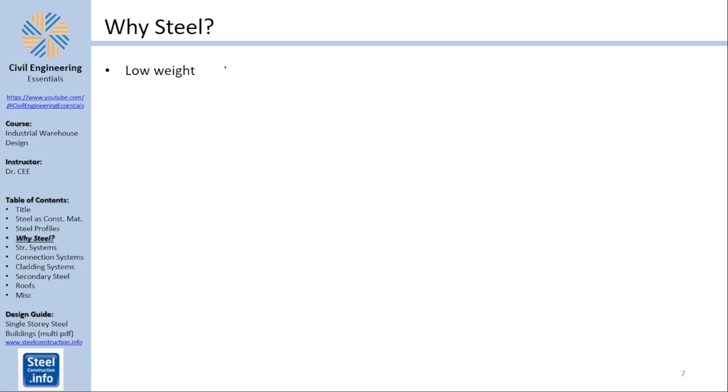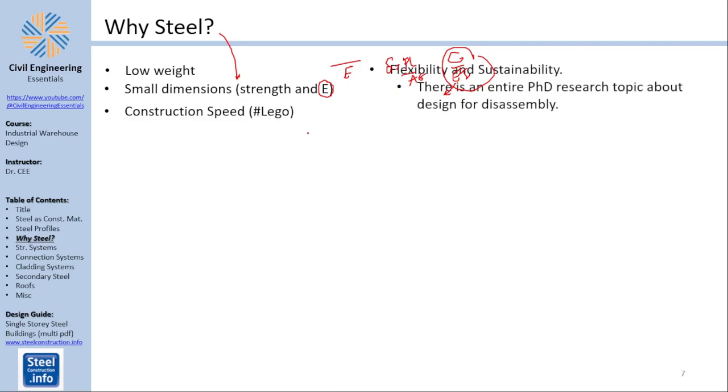Why steel? Steel has low weight because of its high strength to weight ratio. Also steel enables smaller dimensions because of its high strength and high elastic modulus meaning that in all cases your deflection is small. Construction speed, the hashtag Lego here, and of course there is also flexibility and sustainability.